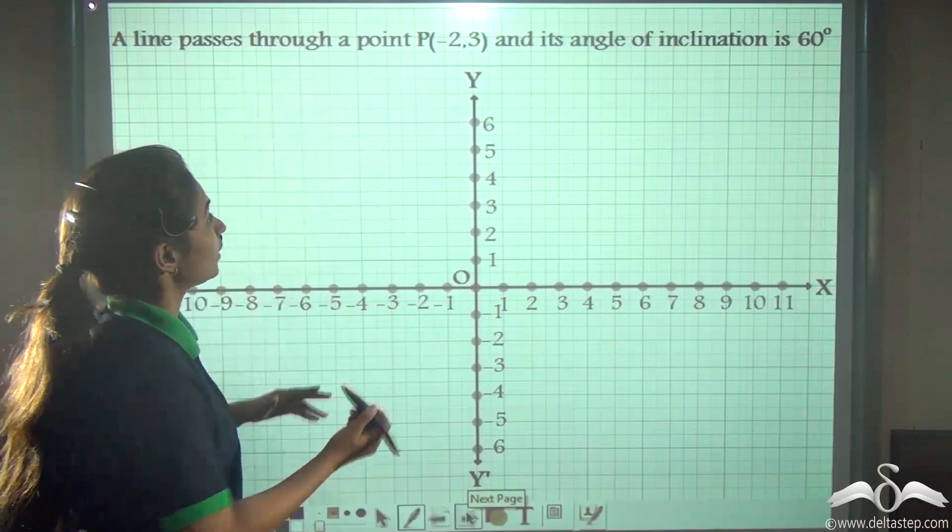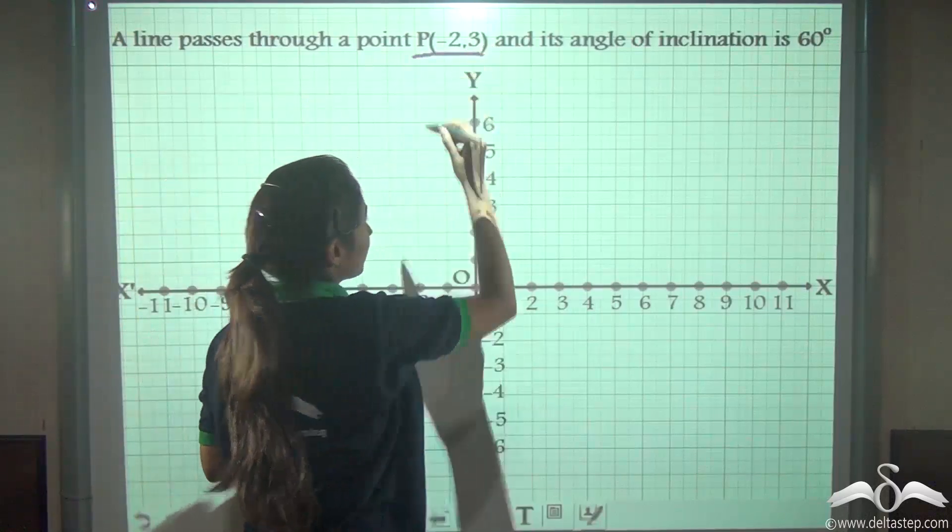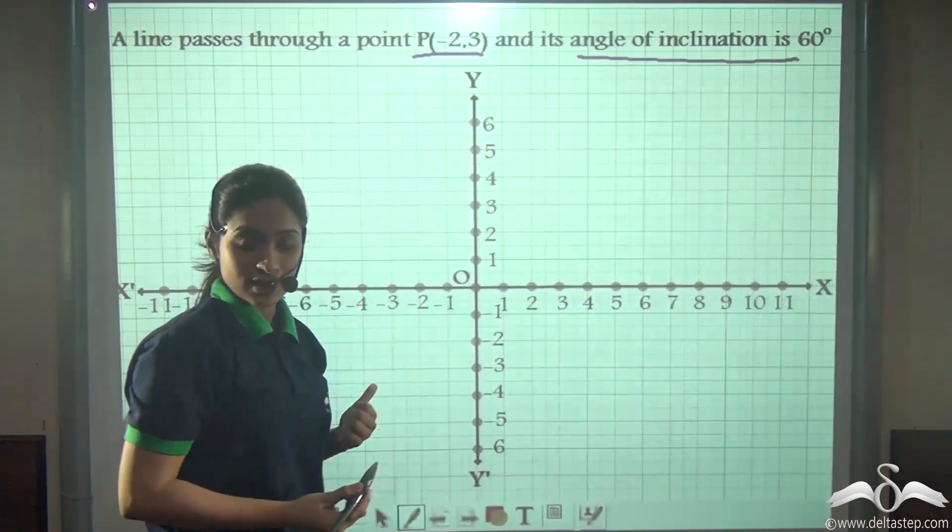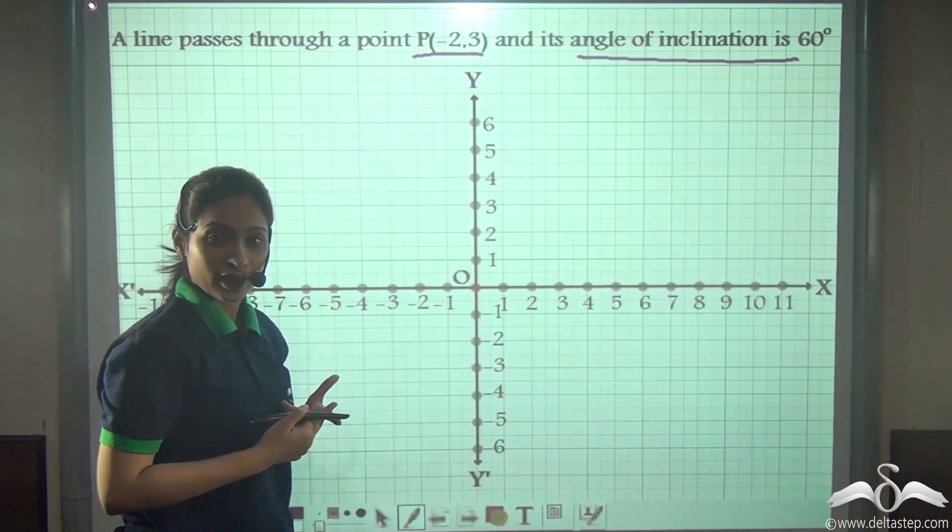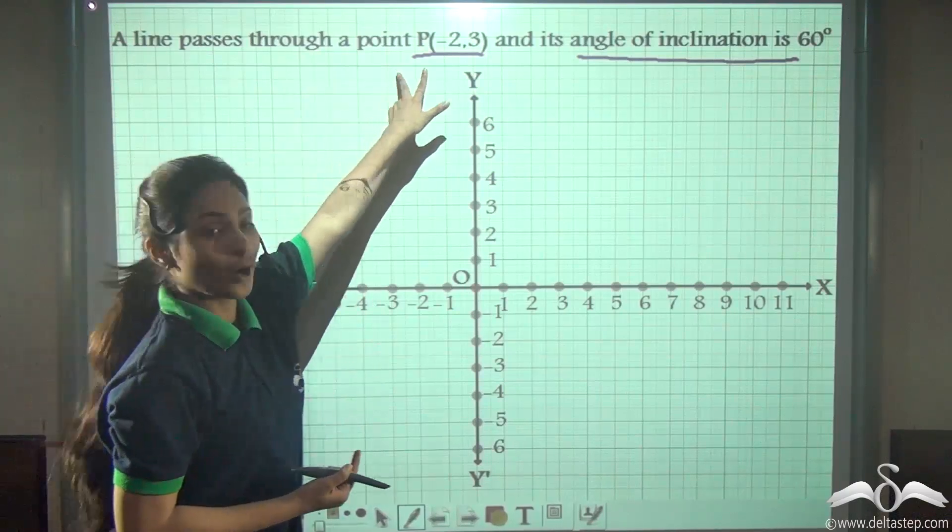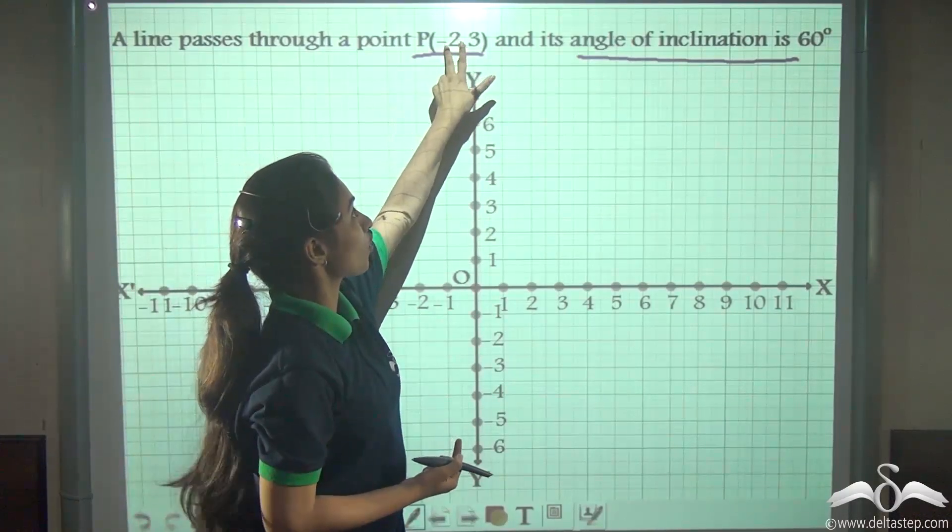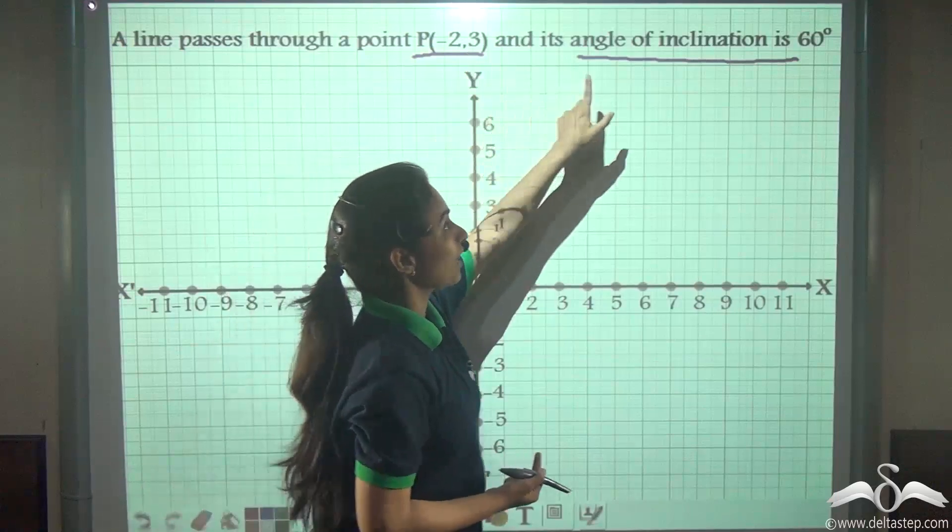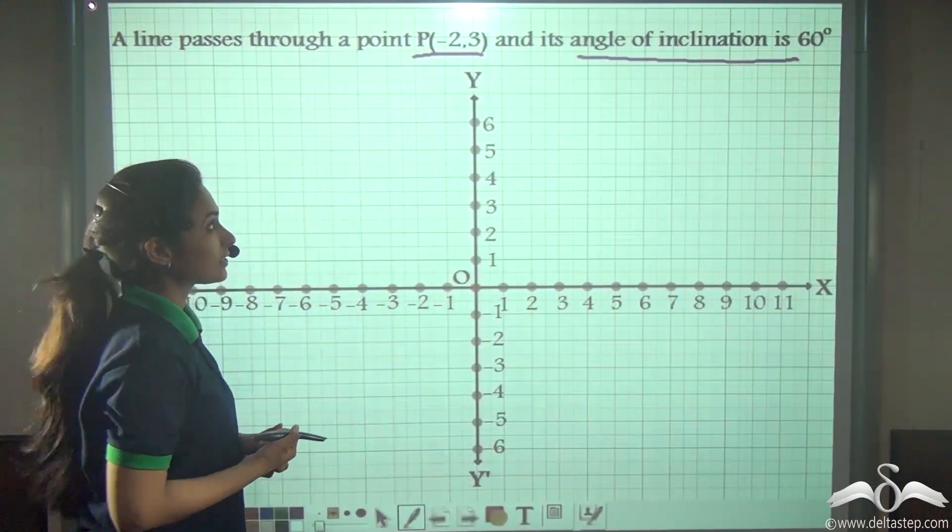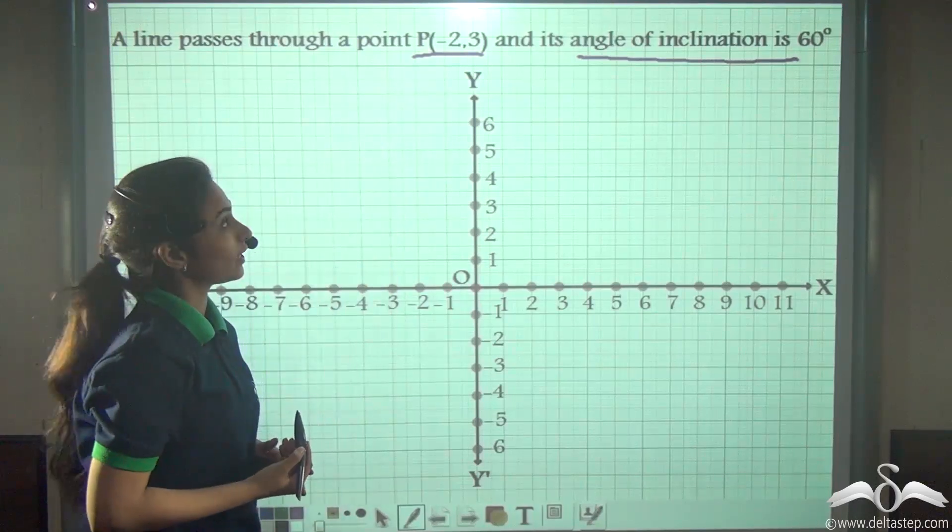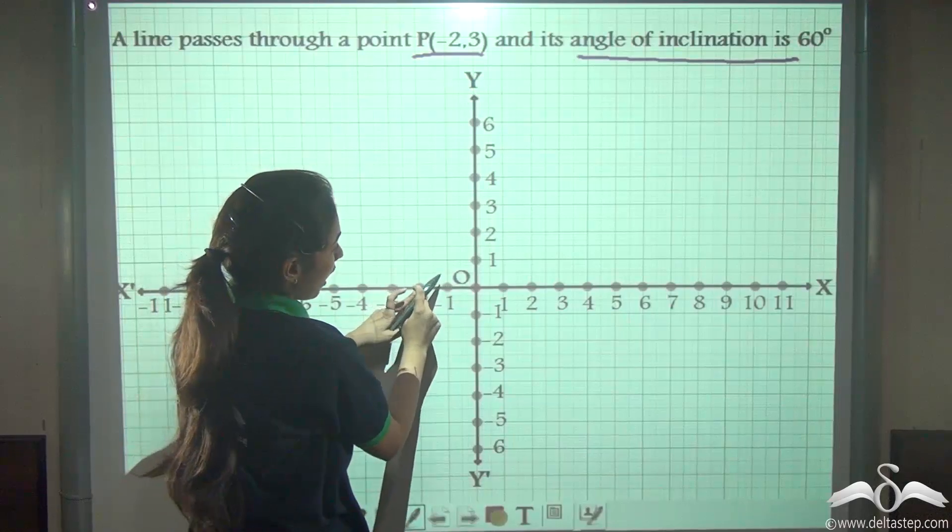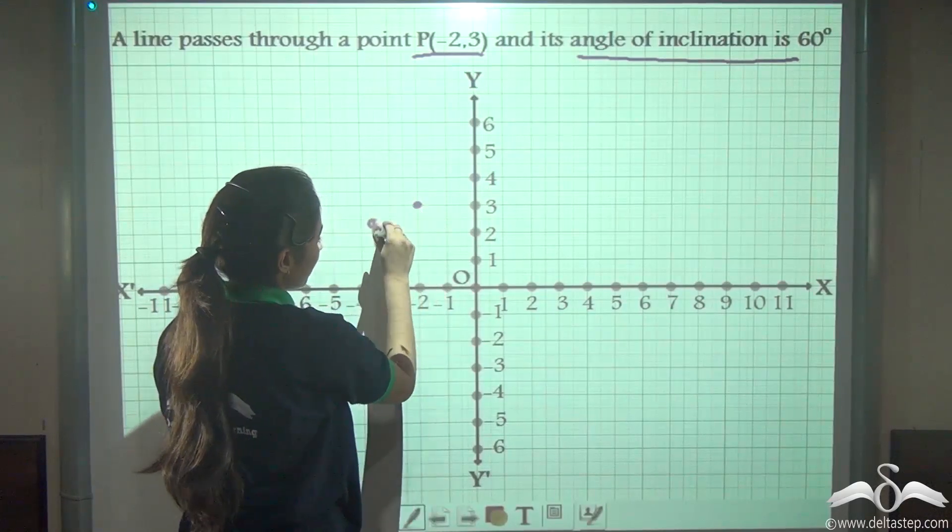A line passes through a point P(-2, 3) and its angle of inclination is 60 degrees. In the first example we were given angle of inclination and the y-intercept. Here we have been given a point - it has an x-coordinate and a y-coordinate, and we have been given angle of inclination. Now can you draw a line here? Let's see. First locate this point P, that is -2, 3. Minus 2 and 3 here. This is P.